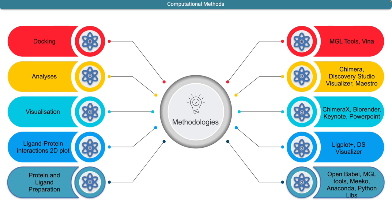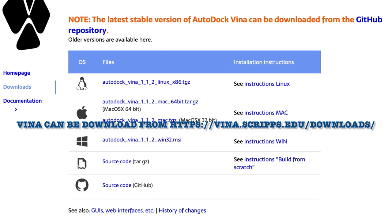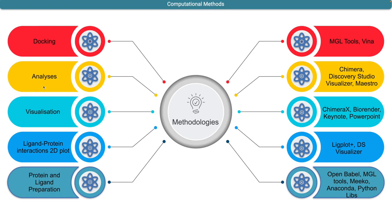For the molecular docking approach you require MGL Tools, which is free, and AutoDock Vina, the latest version 1.2.2. For analysis purposes we need Chimera, Discovery Studio Visualizer, and Maestro. For visualization we require ChimeraX, BioRender, Keynote, and PowerPoint. For 2D plots of ligand-protein and protein-protein interactions we require LigPlot+ and DS Visualizer. For basic annotation and protein and ligand preparation we require libraries such as Open Babel, MGL Tools, and Meeko.